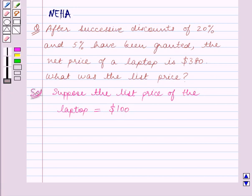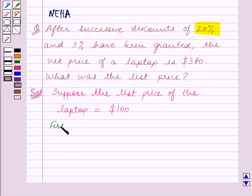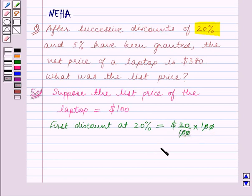Now it is given that the first discount is of 20%. So first discount at 20% is equal to 20 upon 100 into $100. Zeros get cancelled, and this is equal to $20.